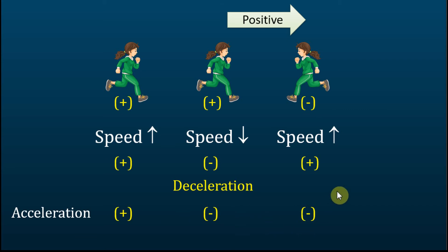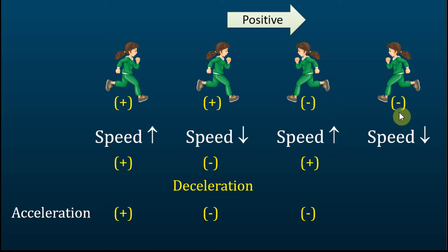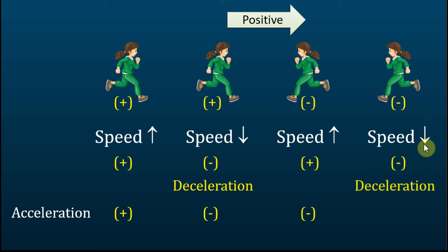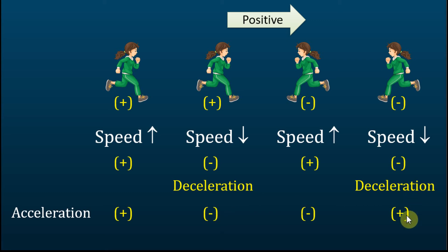Let's see the last case. She is moving in the negative direction, and this time she is moving with a decreasing speed. Therefore, the rate of speed change is negative. Bear in mind that she is slowing down — she is undergoing deceleration. So what is the sign of acceleration? The answer is the acceleration is positive. From these four cases, we can see that deceleration can be negative acceleration, and deceleration can also be positive acceleration. So we can conclude that deceleration is not equal to negative acceleration.